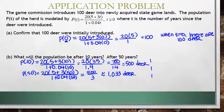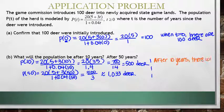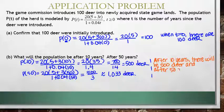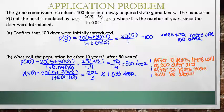We can state this as a sentence. After 10 years, there will be 500 deer, and after 50 years, there will be about 1033 deer.